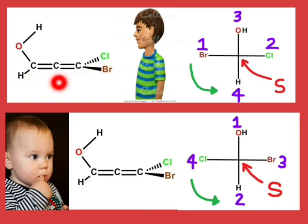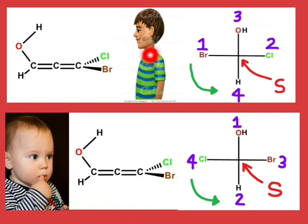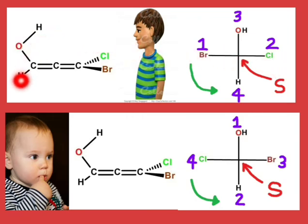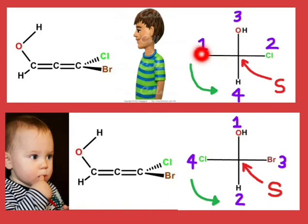Here you can see this molecule having even number of double bonds with hydroxyl, hydrogen, chlorine, and bromine — four different atoms attached to it. There are two ways of looking at this molecule: either from this boy's perspective or from this small boy's perspective. According to the first rule, bromine and chlorine — which are closer to the observer — will get the first and second priority on the basis of atomic number. Bromine has higher atomic number so it gets the first priority, and chlorine gets the second priority. The hydroxyl group and the hydrogen group are away from this observer, so hydroxyl gets the third priority and hydrogen gets the fourth priority. On moving from 1 to 2 to 3, it is anti-clockwise, so the configuration is S.